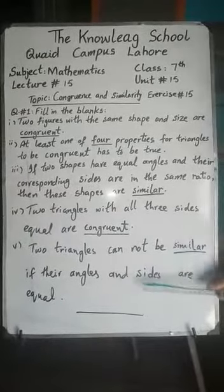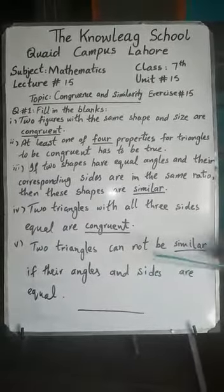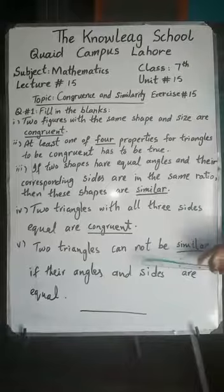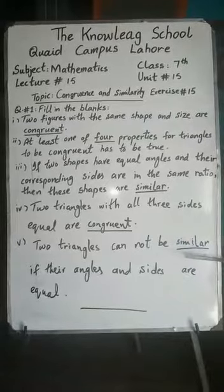Fifth part: two triangles can be similar if their angles and sides are equal. The answer is: they cannot be similar — because similar means having the same shape, not necessarily the same size.